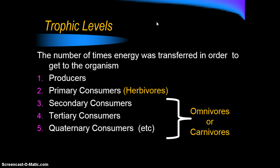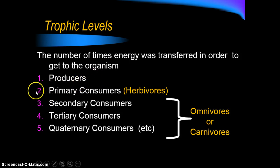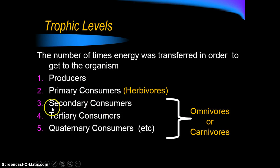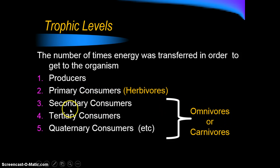In this cycle we talk about trophic levels. A trophic level tells you the number of times energy was transferred to get to that organism. Trophic level one includes the producers — organisms making food in the first place. Trophic level two includes primary consumers, which are herbivores that eat only producers. Trophic level three is secondary consumers, which eat primary consumers and tend to be carnivores or omnivores. Trophic level four is tertiary consumers, and trophic level five has quaternary consumers.